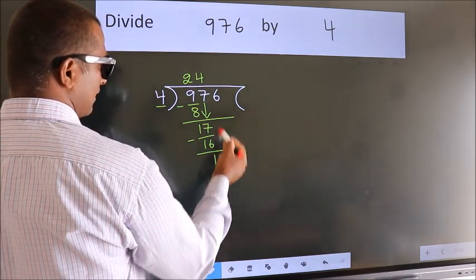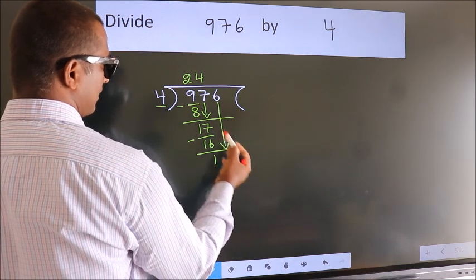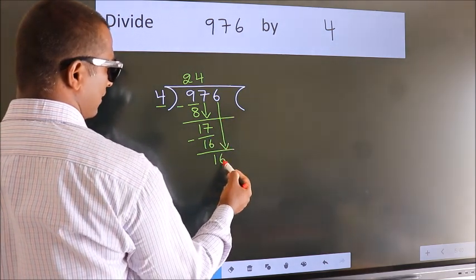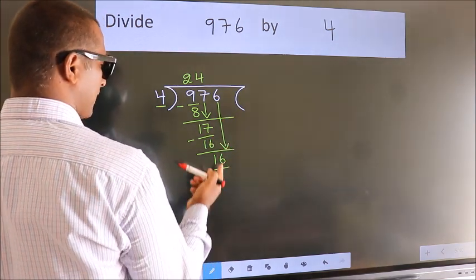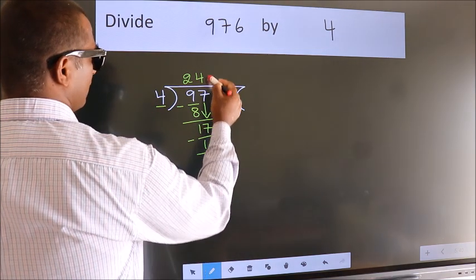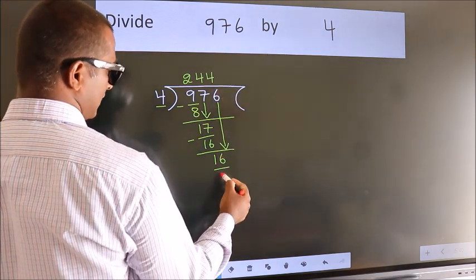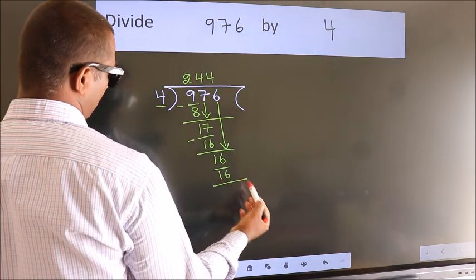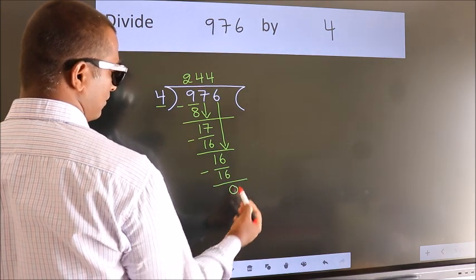After this, bring down the beside number. So, 6 down. So, 16. When do we get 16? In 4 table. 4 fours, 16. Now, we subtract. We get 0.